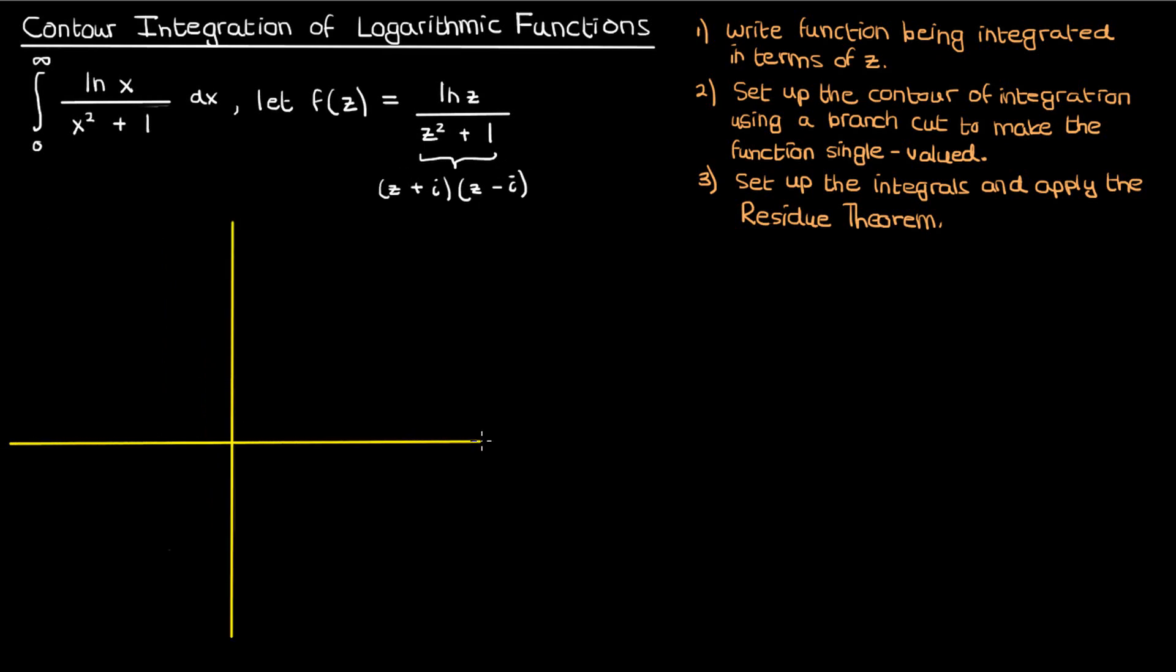Now this factorization means that if we draw the complex plane the denominator of f of z gives rise to two poles, one at z equals i up here and the other at z equals negative i down here. In addition the natural log itself is undefined at zero so the origin is also a pole.